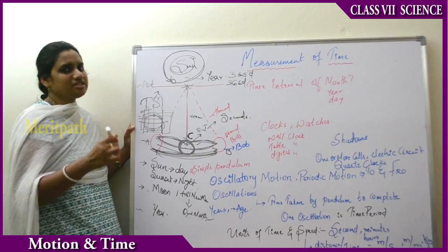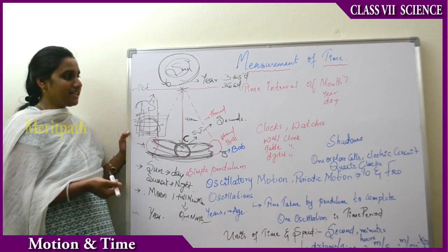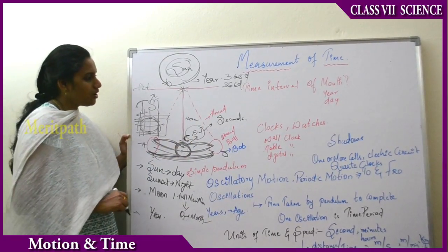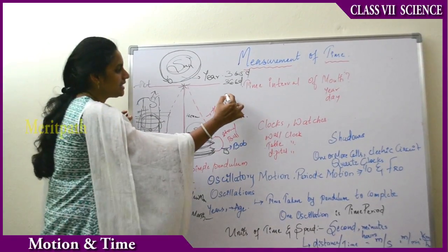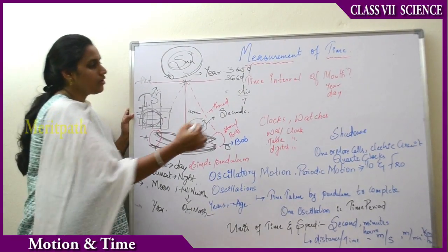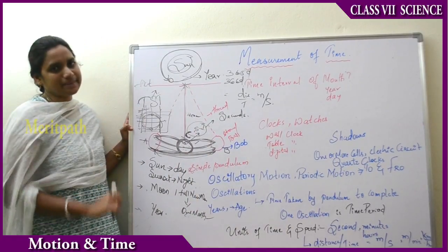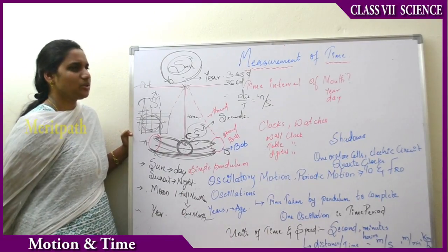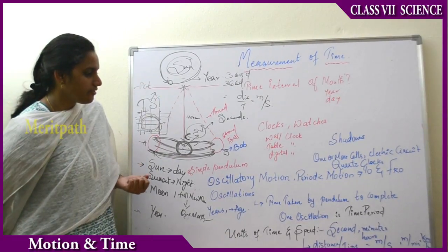Sometimes we use minutes and hours based upon our calculations. For example, if anyone asks what is your age, we consider it in years. Based upon the situation we use the units of time. Now let us see the units of speed. Speed is nothing but distance divided by time — the total time taken to travel a particular distance. The distance is measured in meters and the time taken is in seconds, so the SI unit of speed is meters per second. We also use kilometers per hour and meters per minute.